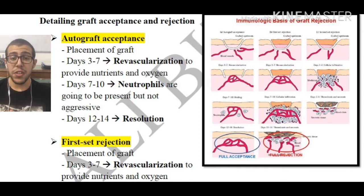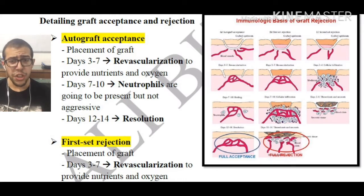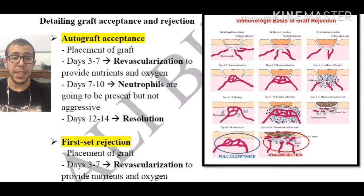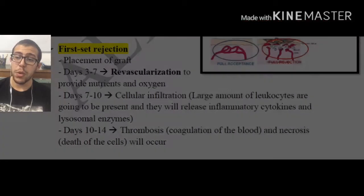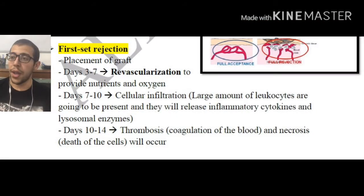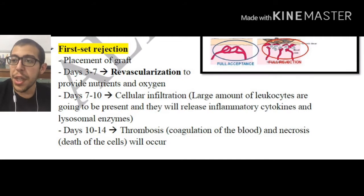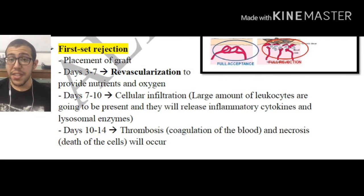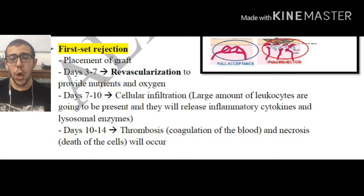First set rejection: placement of the graft is going to be taking place. Days 3 to 7, revascularization occurs to provide nutrients and oxygen — without revascularization we will not be able to sustain these cells and they're going to be dying shortly. Importantly, in first set rejection, days 3 to 7 there is no immune response — nothing new is taking place. As covered in the previous episode, the reaction in first set rejection is delayed.